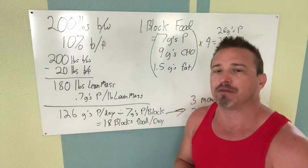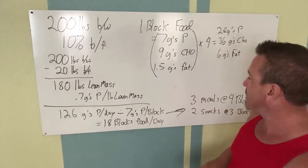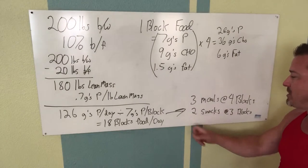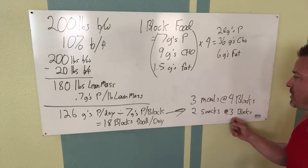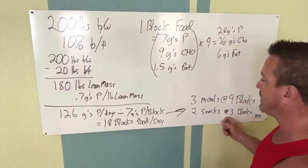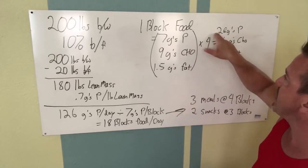To divide this out over five meals, it's going to be three meals at four blocks of food each and then two snacks at three blocks of food each. So 12 plus six is going to be the 18 blocks of food per day.